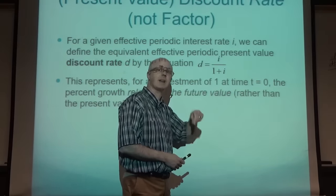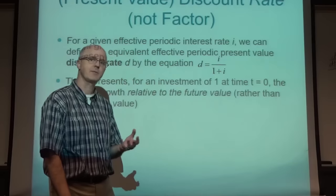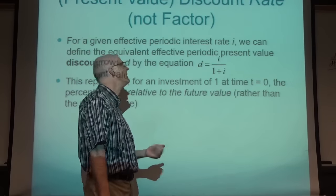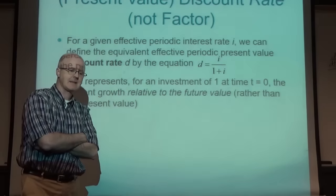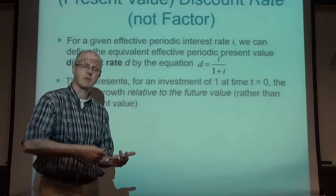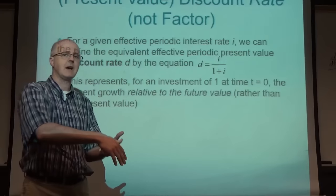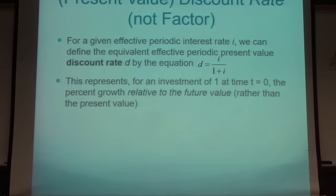Example: if you have $100 growing to $110, that's 10% growth (10 out of 100). The discount rate D gives 10/110 instead. Historically this relates to bonds: a $1,000 bond is sold to you at a discount - you pay less than $1,000 to receive $1,000 in the future. This is how interest is often quoted for government or corporate bonds.